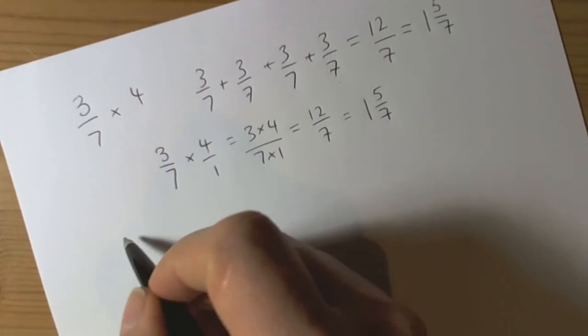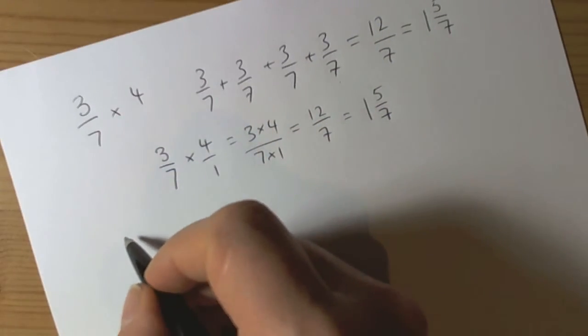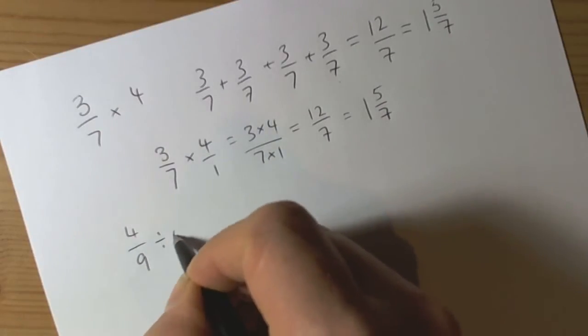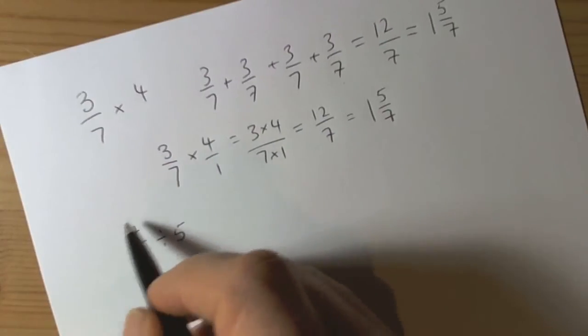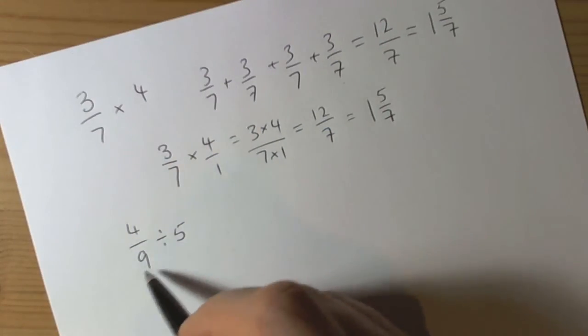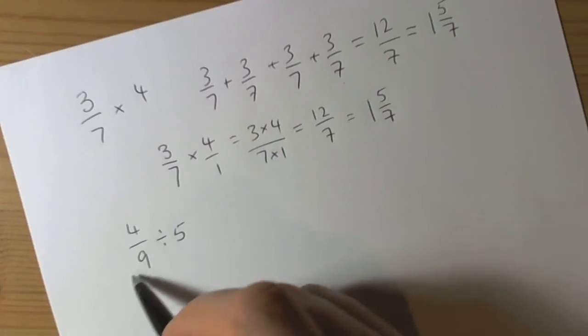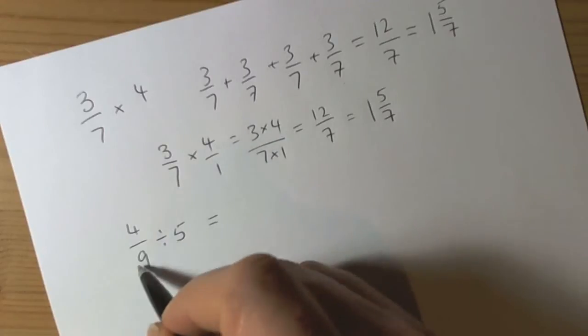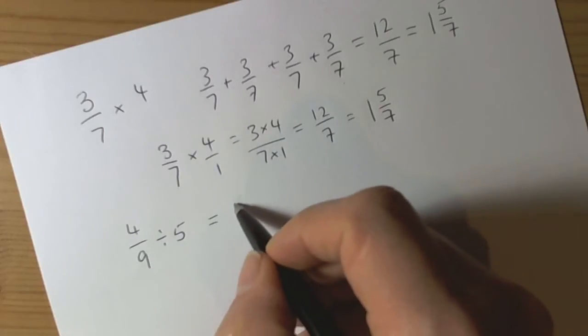We've also got to consider what happens when we do sums with division. So we've got something like 4 ninths divided by 5. Now, this is not so easy. What we need is a common denominator that is a multiple of 5. That's one way of thinking of this sum. So a common multiple of 9 that has 5 involved is 45.